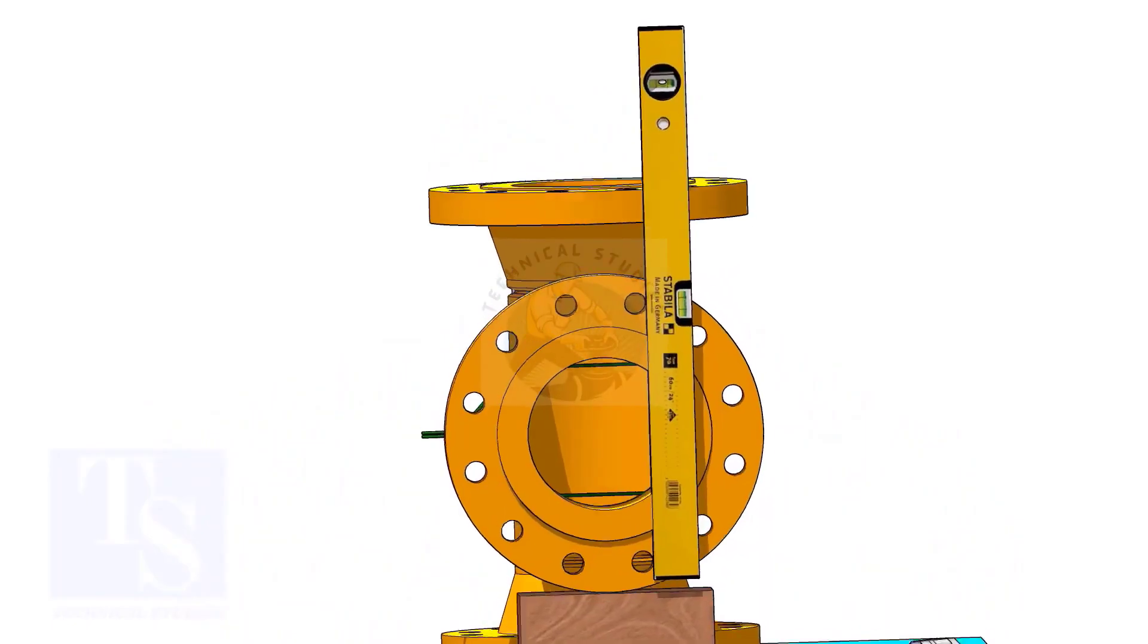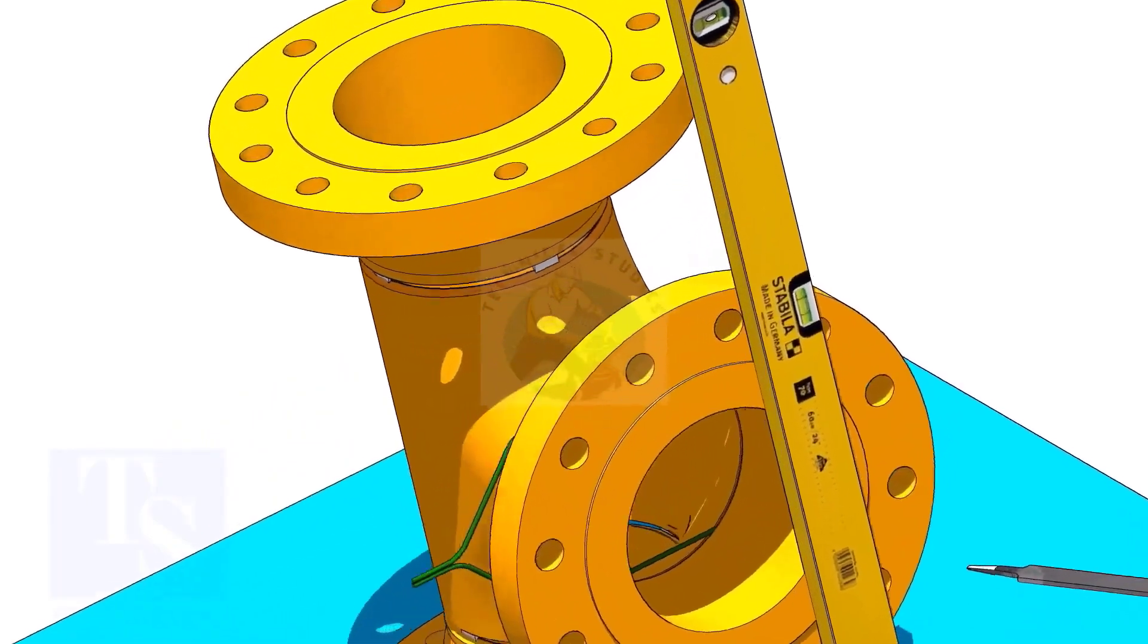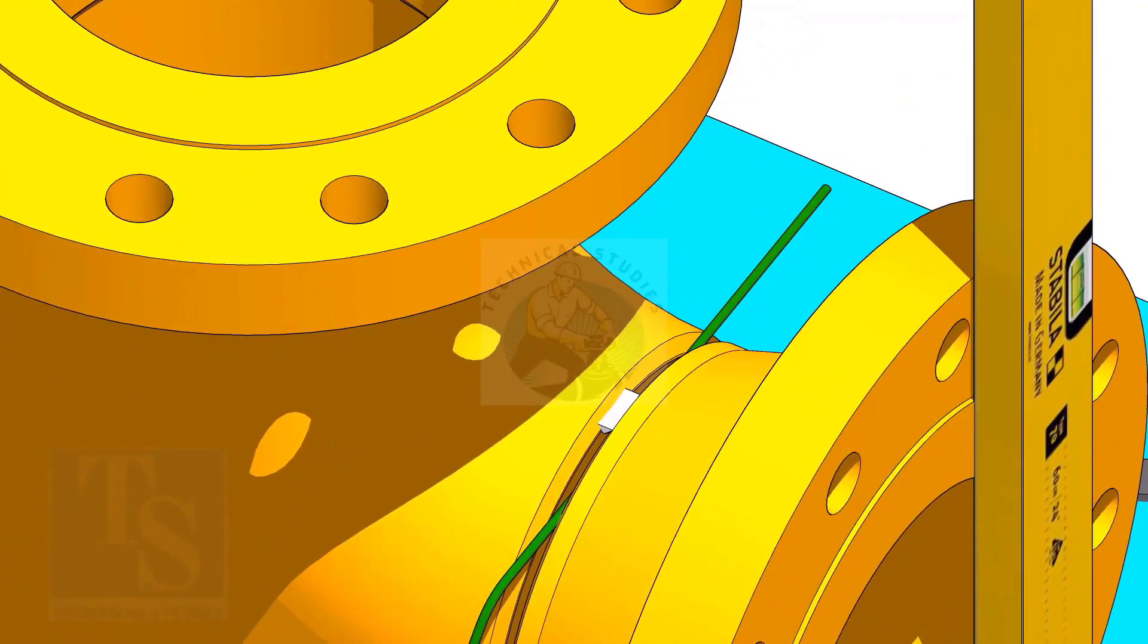Correct the plumbness of the flange holes, as shown. Tack weld on the top side.